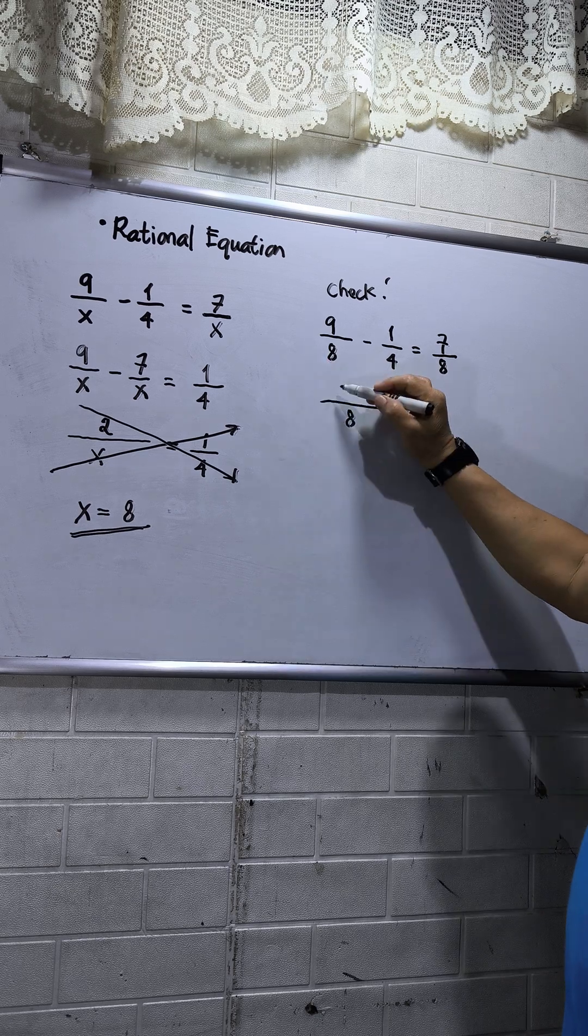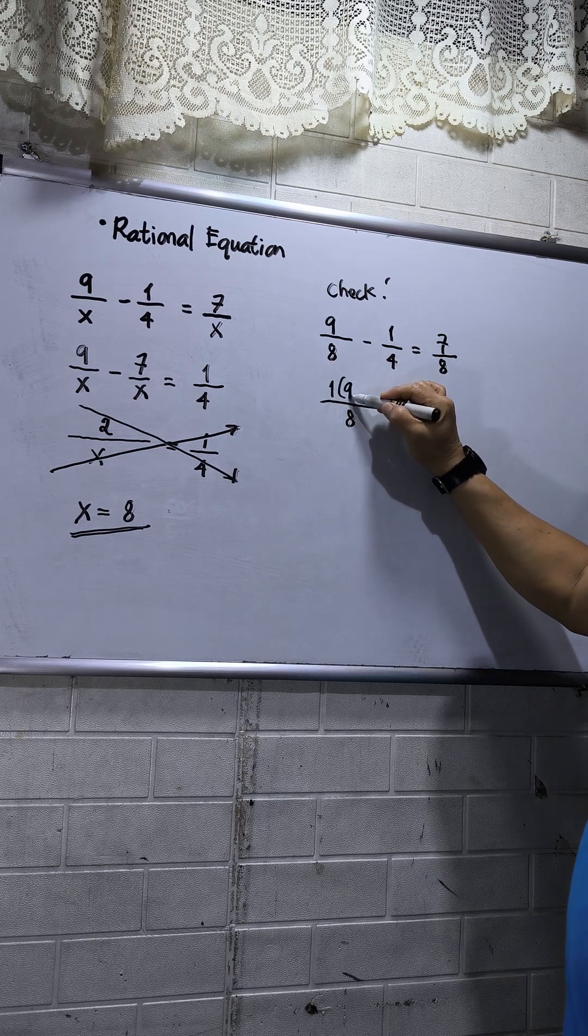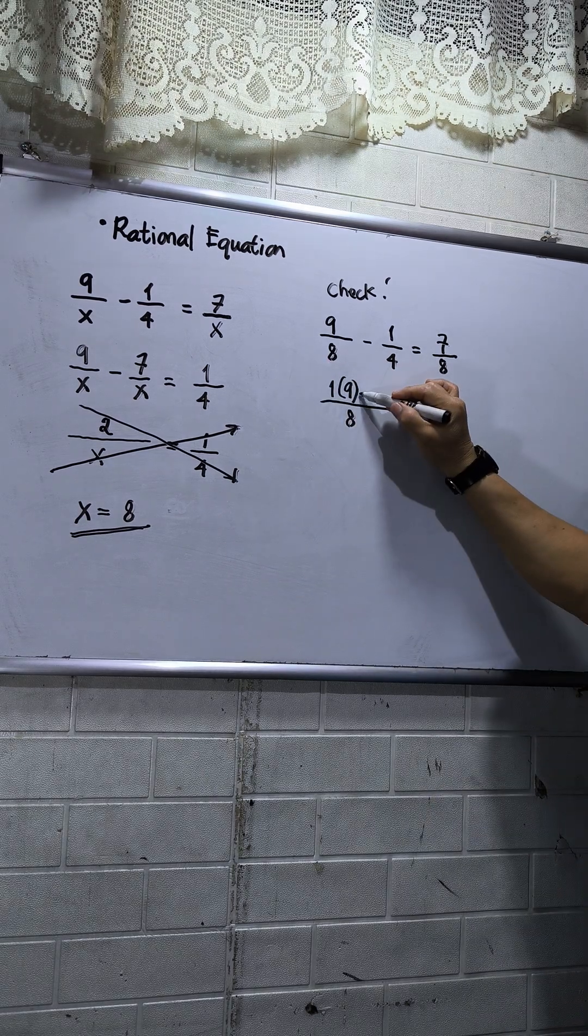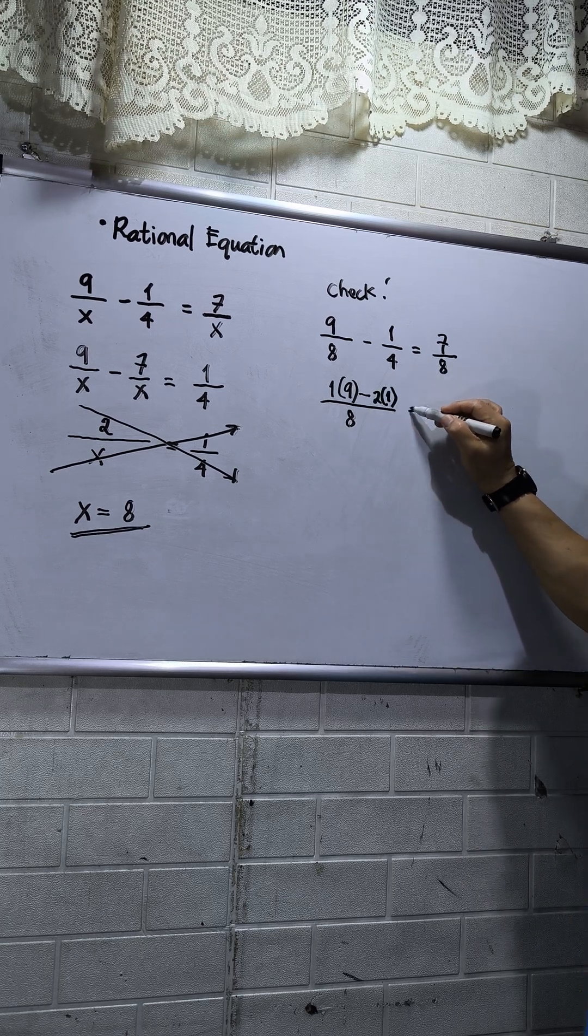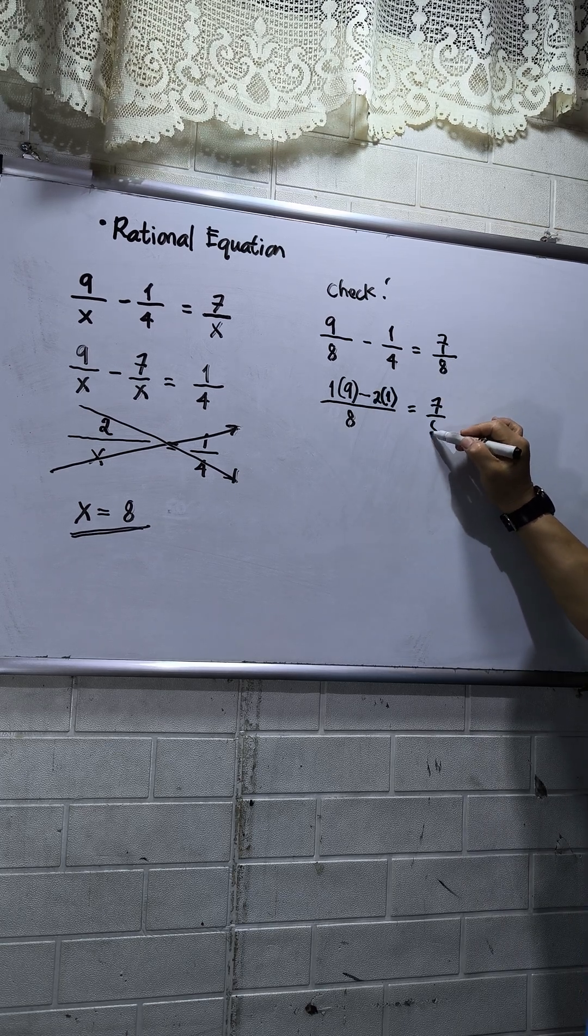8 divided by 8, that is 1, times the numerator which is 9. Then minus 8 divided by 4, that is 2, times 1. Then this will be equal to 7 over 8.